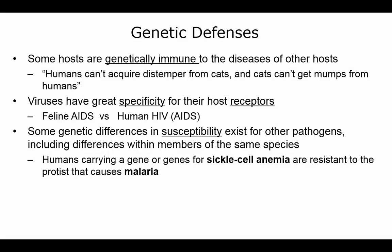Genetic defenses include the fact that viruses are very specific for their host receptors. For example, we are genetically immune from diseases that other animals get — we can't get distemper and they can't get mumps from us. There is feline AIDS and there is human HIV/AIDS — they are not the same, they're very specific. Also, if you carry the gene for sickle cell anemia, you won't be able to get malaria. These are all examples of genetic defenses.